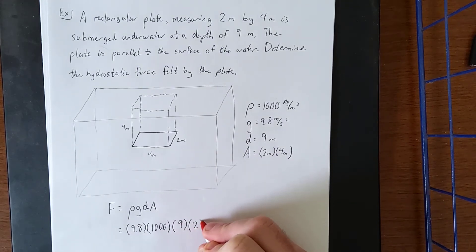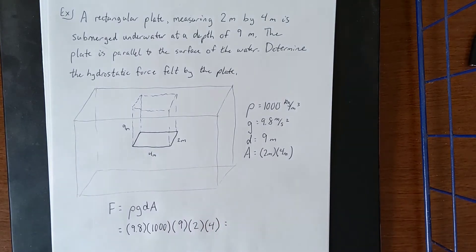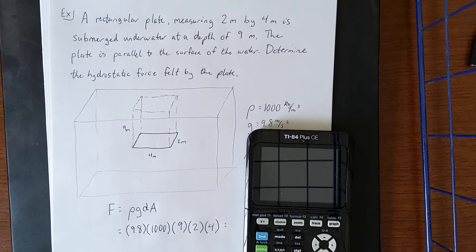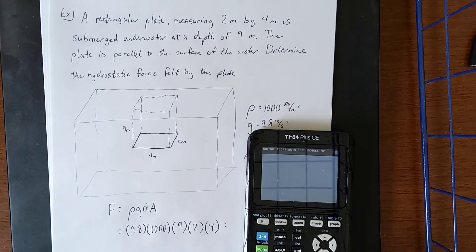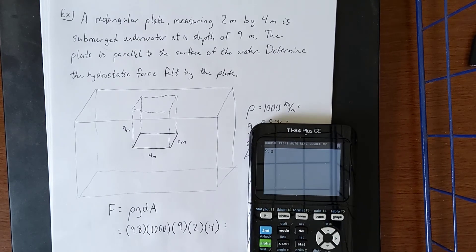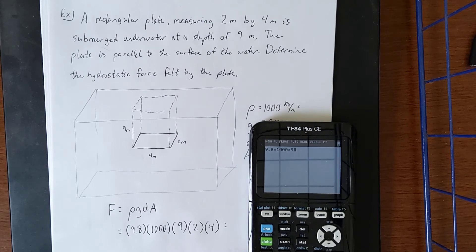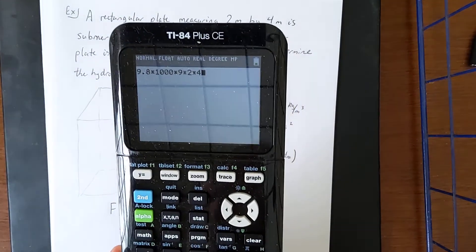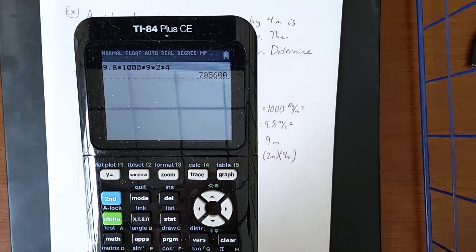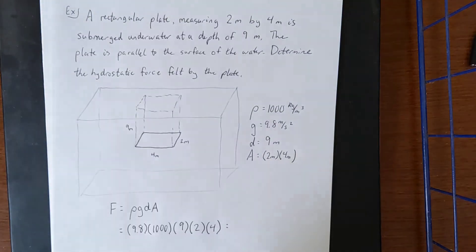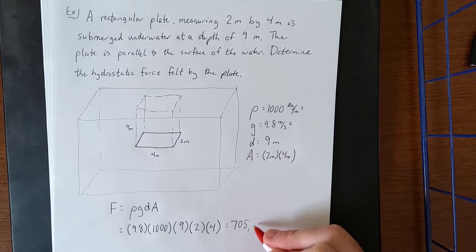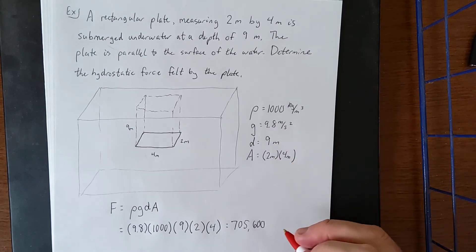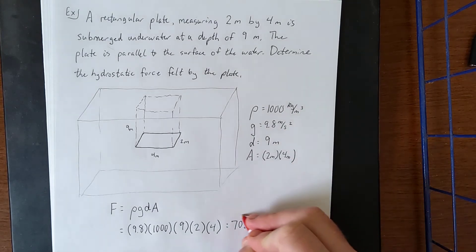Now at this point, if you want to pull out a calculator to help you out with your calculations, that's probably going to be a fine idea. So we'll take our 9.8, multiply by 1000, multiply that by 9, multiply that by 2, and multiply that by 4. And hopefully this displays okay. We get a final result of 705,600. Again, when we multiplied everything together, we got a kilogram meter per second squared, which is the definition of a newton.